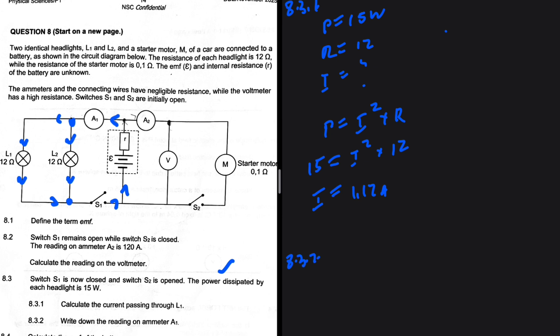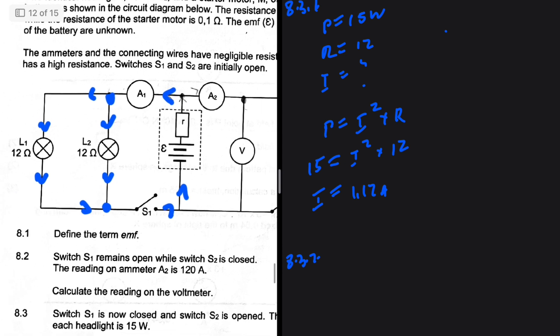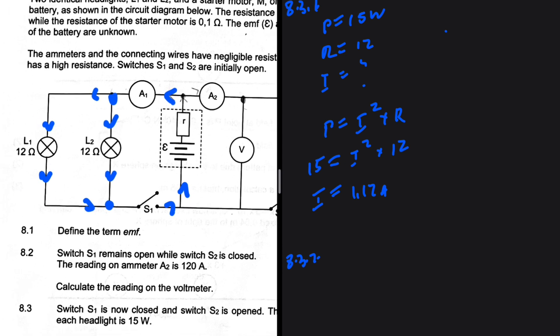And then 8.3.2: write down the reading on ammeter A1. So which current is the ammeter A1 reading? The ammeter A1 is reading total current, as the current does not divide before it passes through A1. And then the current is going to divide into two equal currents, so to say, because the resistance on this path is 12 ohm, the resistance on that path is 12 ohm. Don't mistake, don't misunderstand, don't misinterpret me.